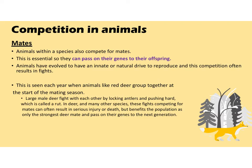The next thing animals will compete for is mates — sexual partners with whom they can make offspring and pass their genes on. Animals have evolved to have an innate or natural drive to reproduce, and this competition often results in fights. This is seen each year when red deer group together at the start of the mating season — large male deer fight by locking their antlers together, which is called a rut. These fights can result in serious injury or death, but benefit the population as only the strongest mate will reproduce and pass on their genes to the next generation.